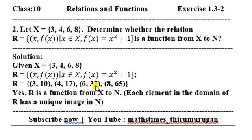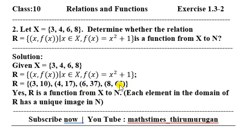The domain maps as follows: the image will be related to the domain — 3 maps to 10, 4 maps to 17, 6 maps to 37, 8 maps to 65.